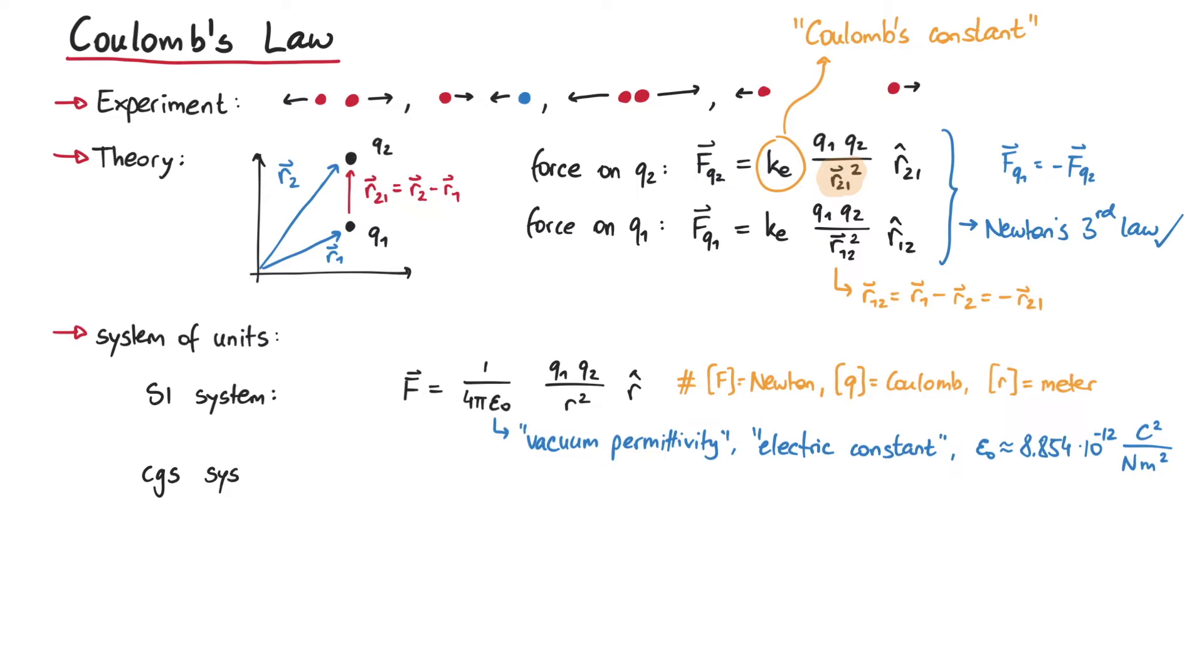Another commonly used system is the so-called CGS system, which stands for centimeter, grams, and seconds. One example of CGS units are the Gaussian units, where the constant ke is equal to 1, so Coulomb's law looks especially simple. In these units, forces are measured in dyne, charges in stat coulombs, and distances in centimeters.